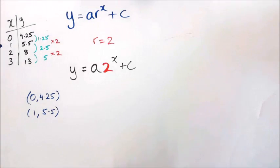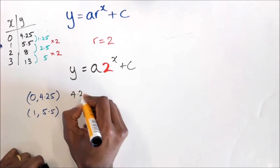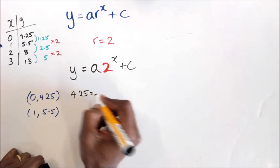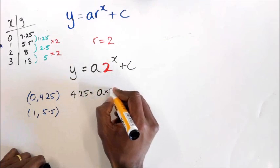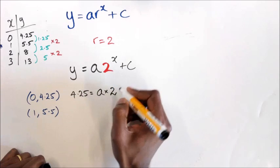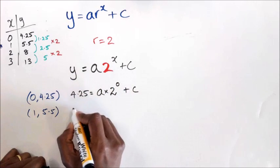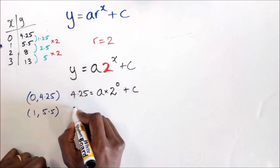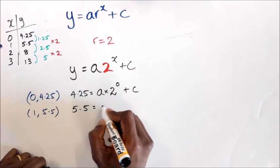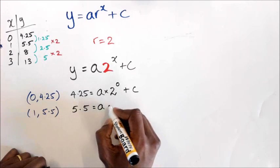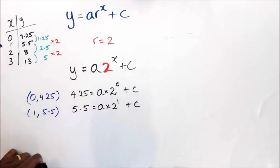I'm going to have 4.25 equals a multiplied by 2 to the power of 0 plus c, and then I'm going to have 5.5 equals a multiplied by 2 to the power of 1 plus c.